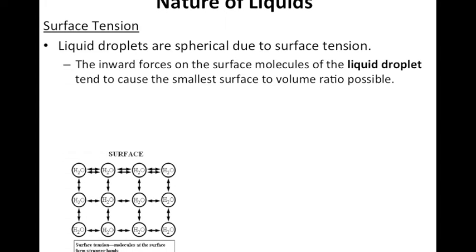Surface tension also causes liquid droplets. So any drop of liquid to be spherical. So the reason water droplets are circular or spherical is due to surface tension. The inward forces on the surface molecules of the liquid droplet tend to cause the smallest surface to volume ratio possible.